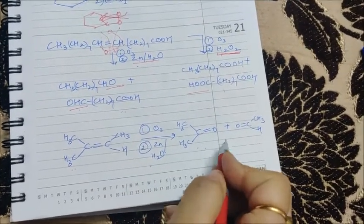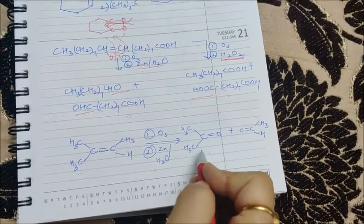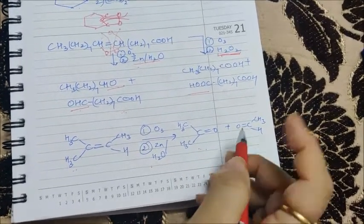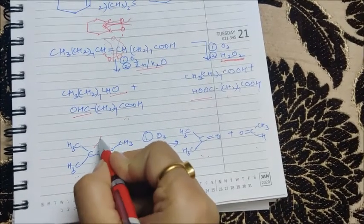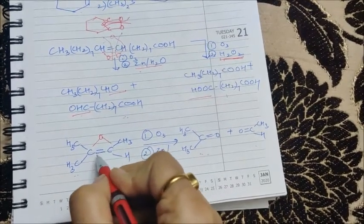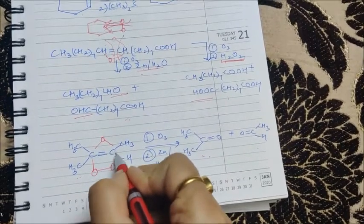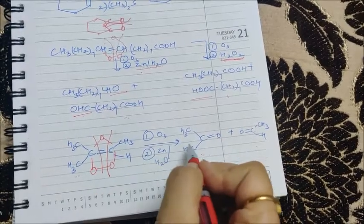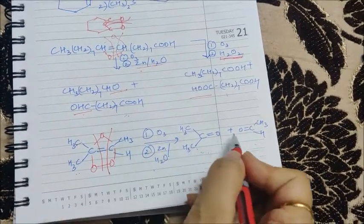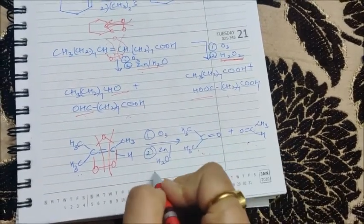Hence a ketone and an acid will be formed in oxidative one. Now let's do this case. Oxygen-oxygen, this double bond will not be there. Now this kind of ozonide will be formed. This will be cleaved. This ketone is forming here and this kind of aldehyde is forming here.